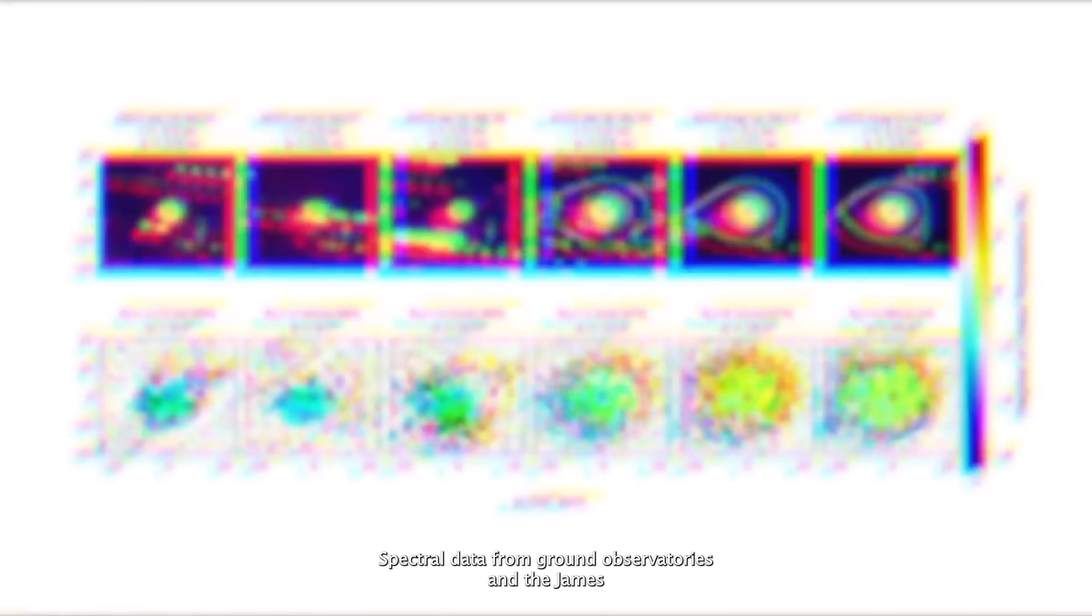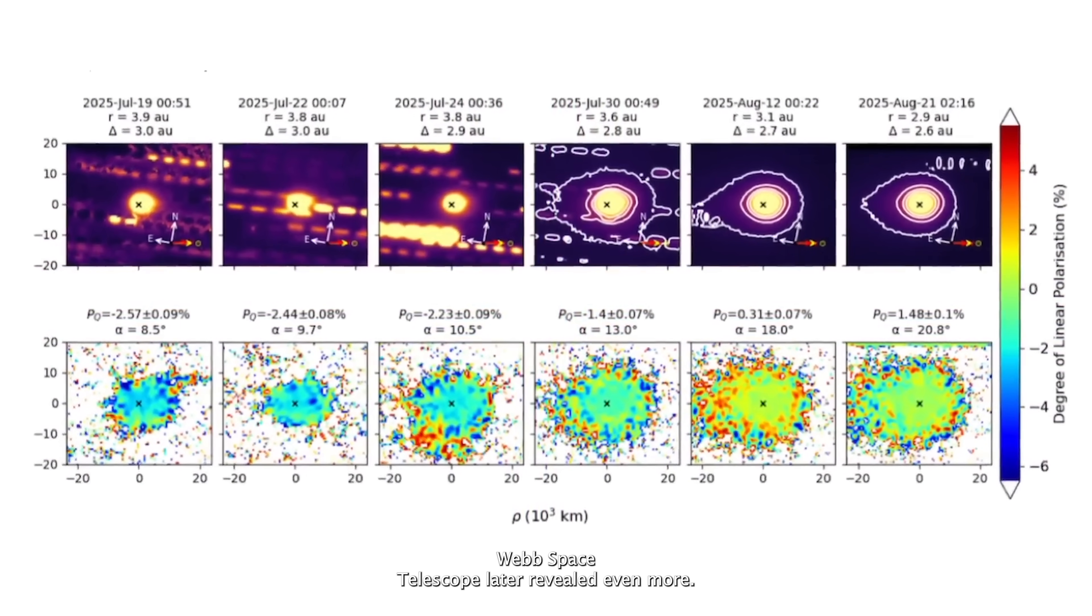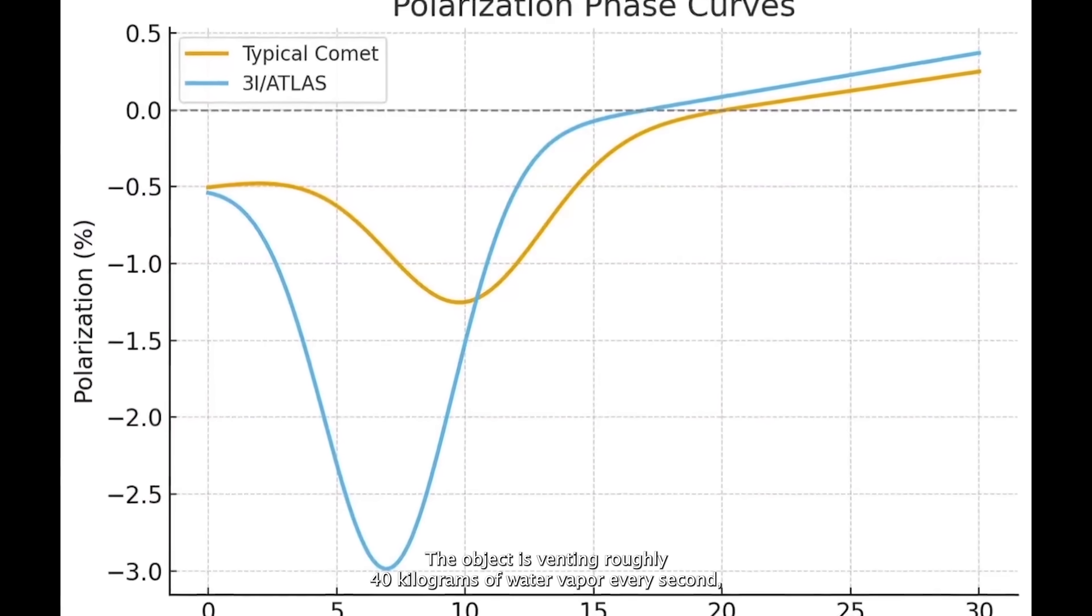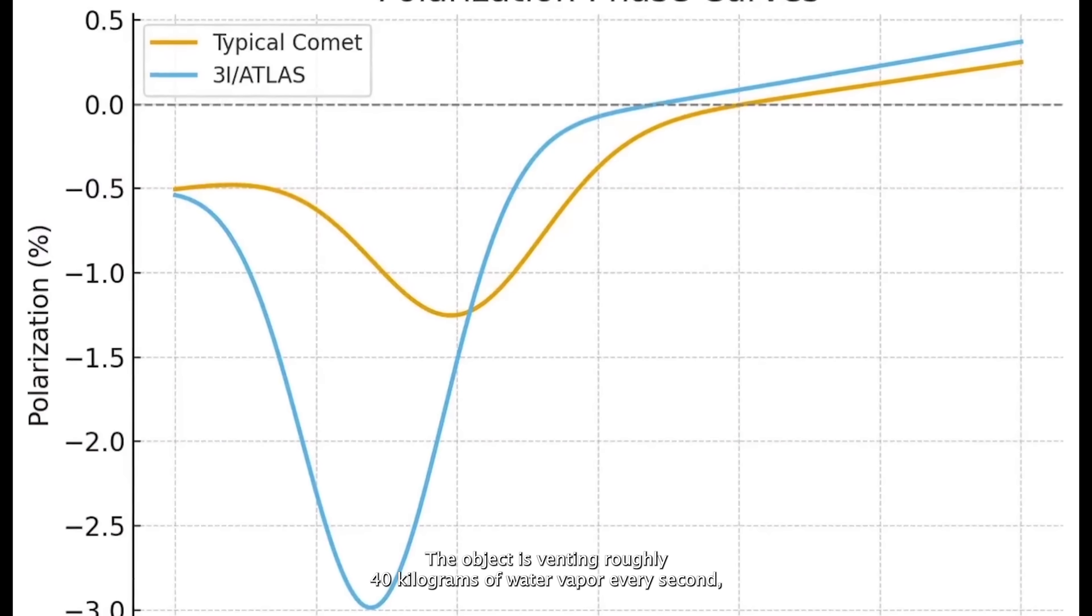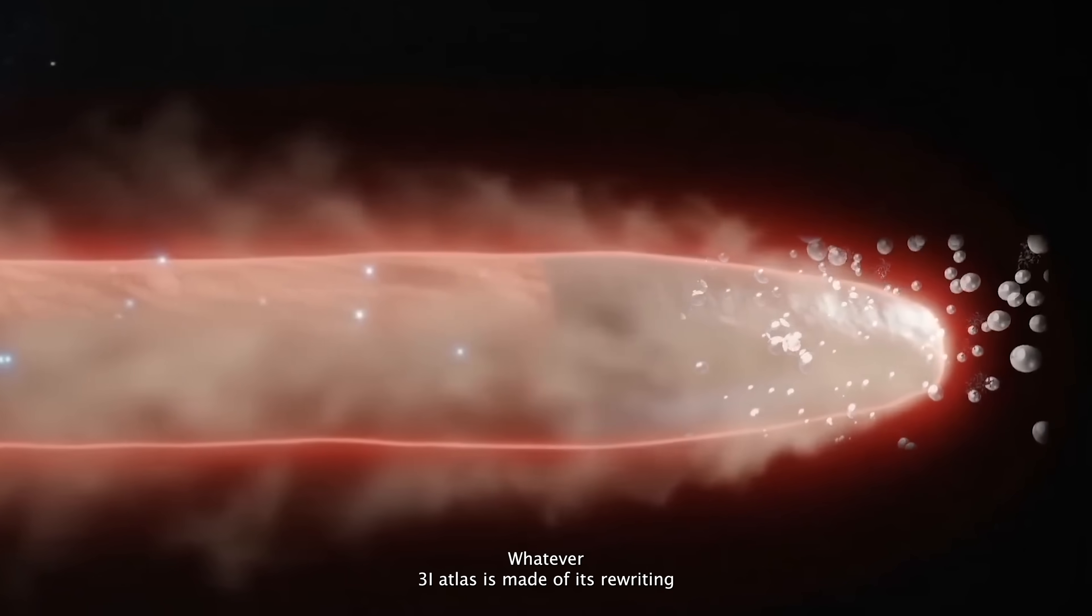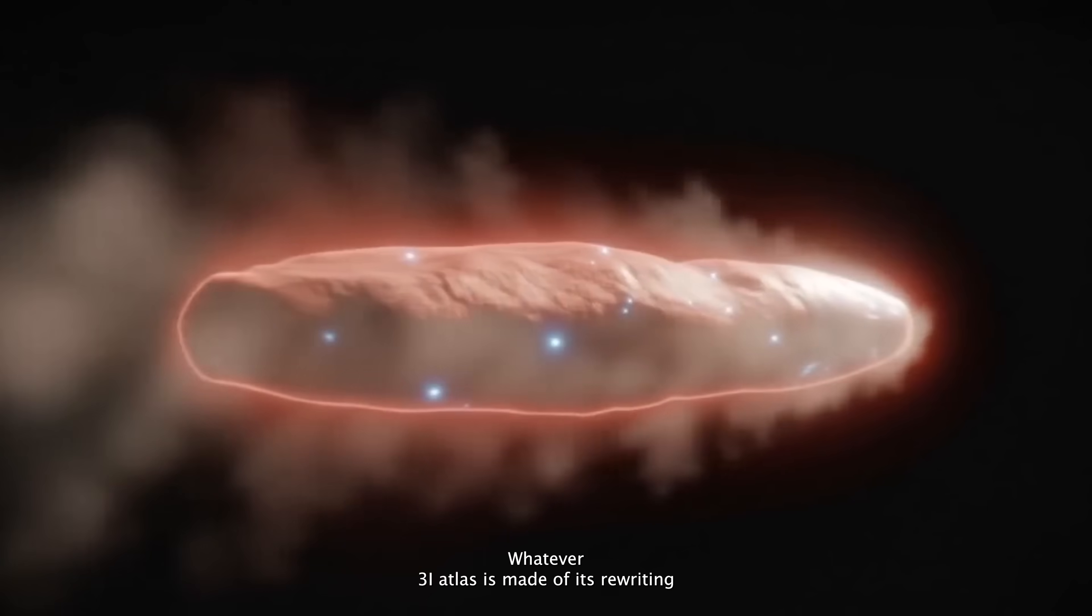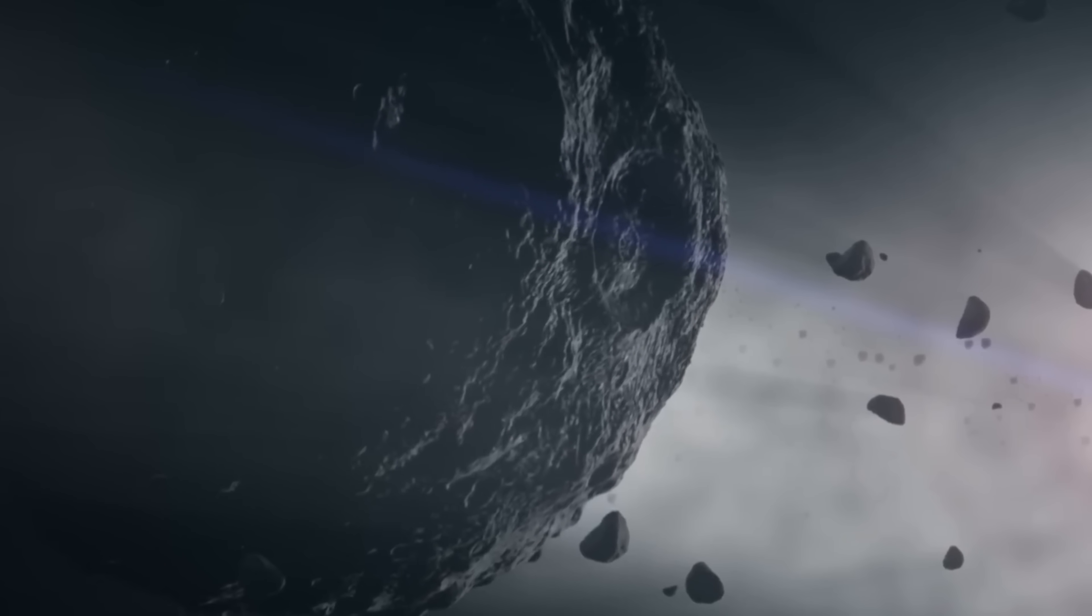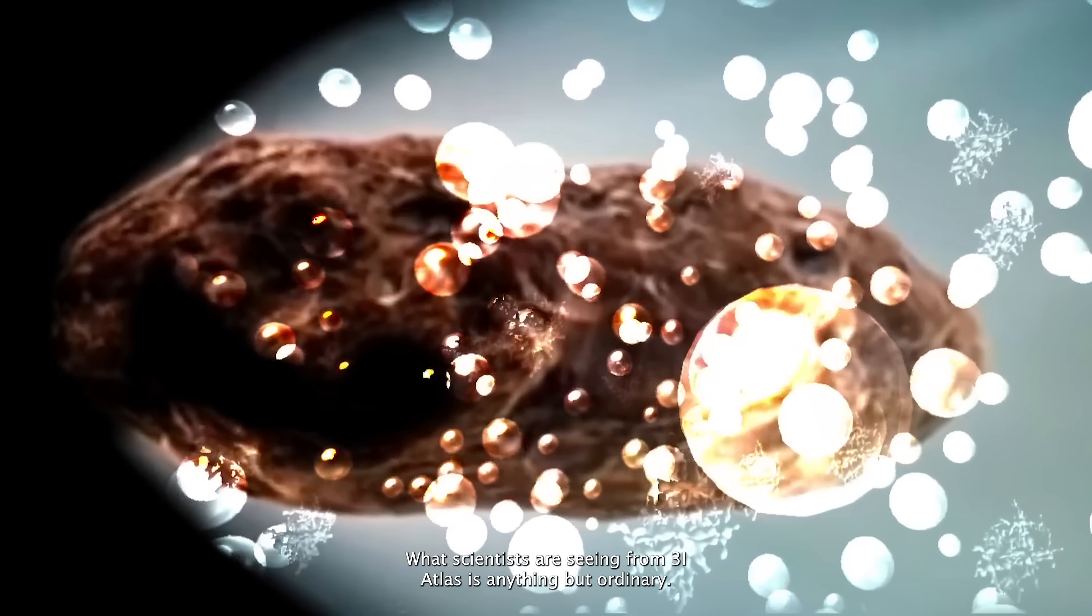Spectral data from ground observatories and the James Webb Space Telescope later revealed even more. The object is venting roughly 40 kilograms of water vapor every second, despite being nearly three astronomical units from the Sun. Whatever 3i Atlas is made of, it's rewriting what we thought we knew about visitors from beyond the stars.